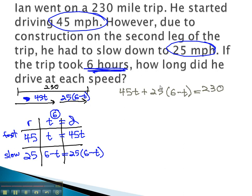We can quickly solve this equation by first distributing through the parentheses. When we do, we get 45t plus 150 minus 25t equals 230. Combining like terms will give us 20t plus 150 equals 230.